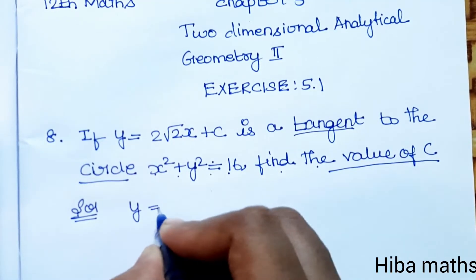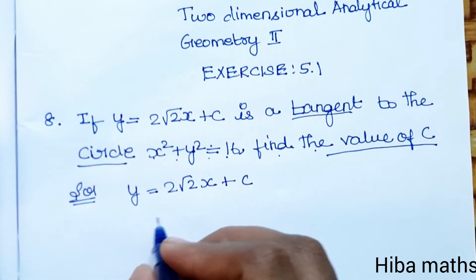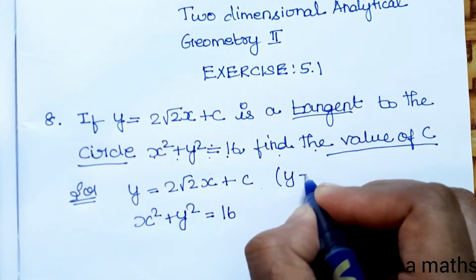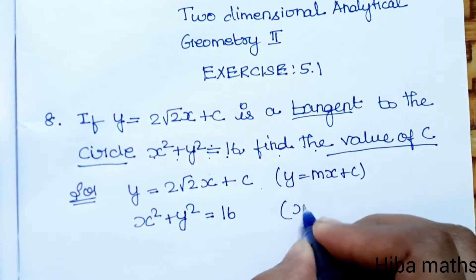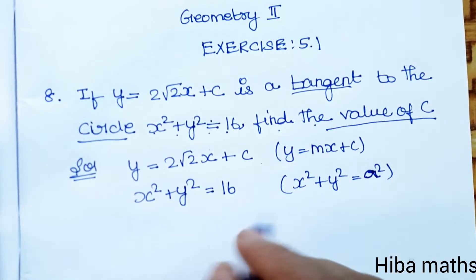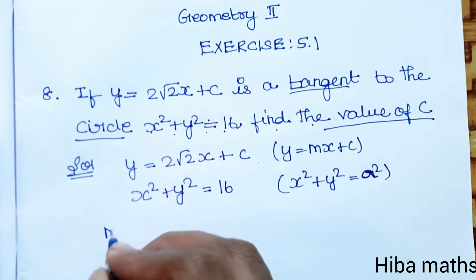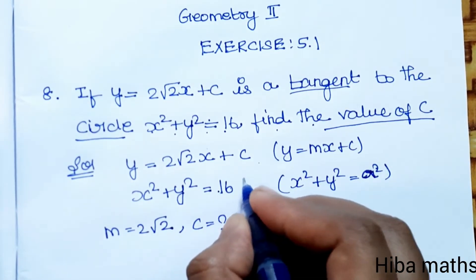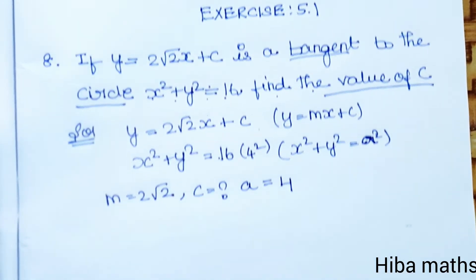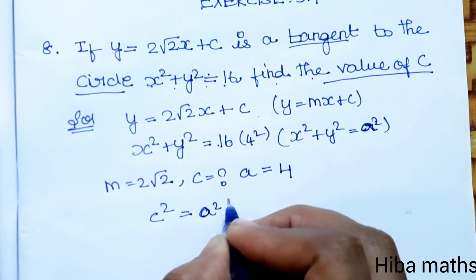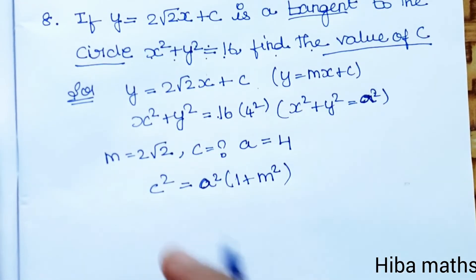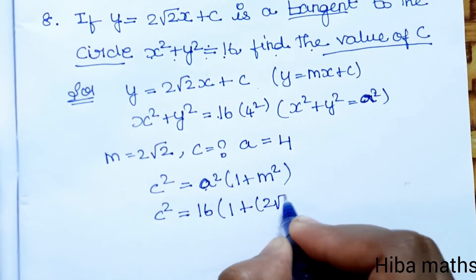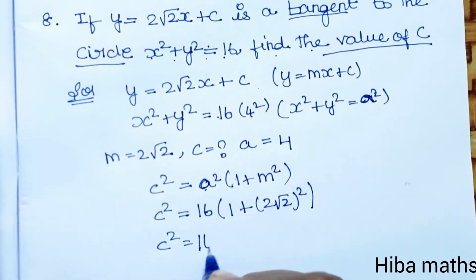The line is y = 2√2·x + c, and the circle is x² + y² = 16. Comparing with y = mx + c, we get m = 2√2 and a² = 16. So c² = 16 × (1 + m²) = 16 × (1 + (2√2)²). Now, (2√2)² = 4 × 2 = 8.